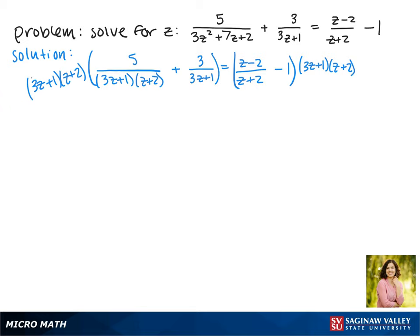We're going to take that whole quantity and multiply it by each term. So on the first term, both factors will cancel and we're just left with 5. On the second term, the 3z + 1 will cancel, so we still have 3 times (z + 2).